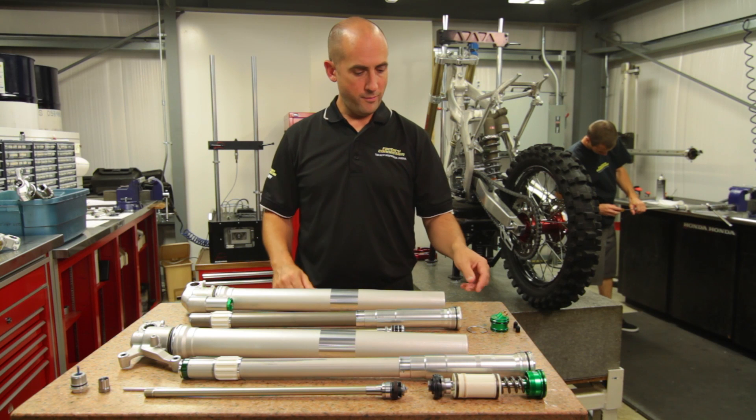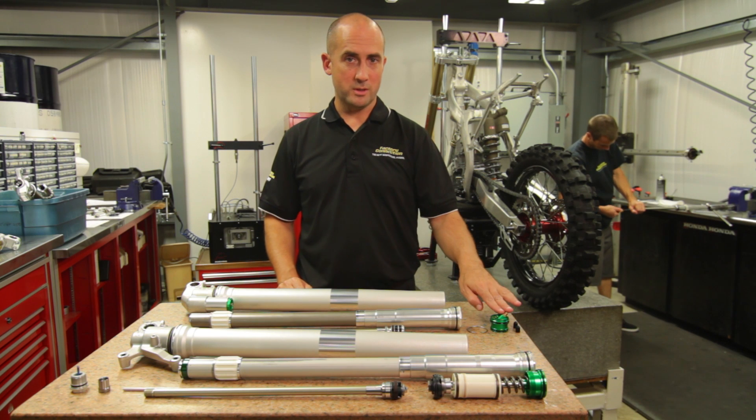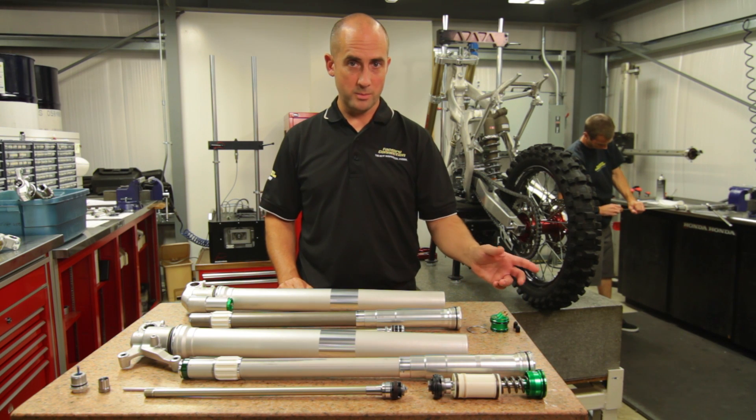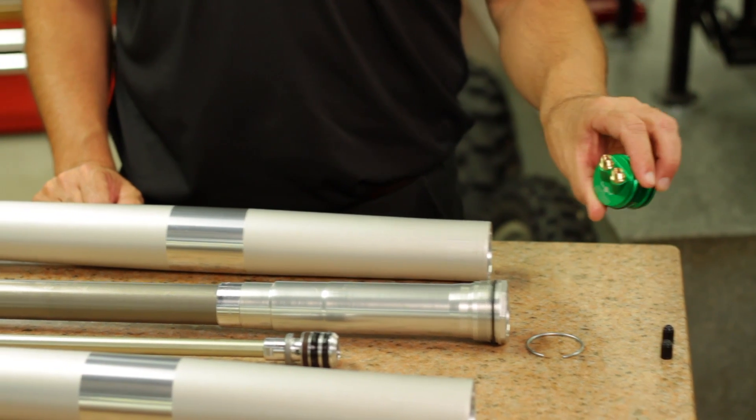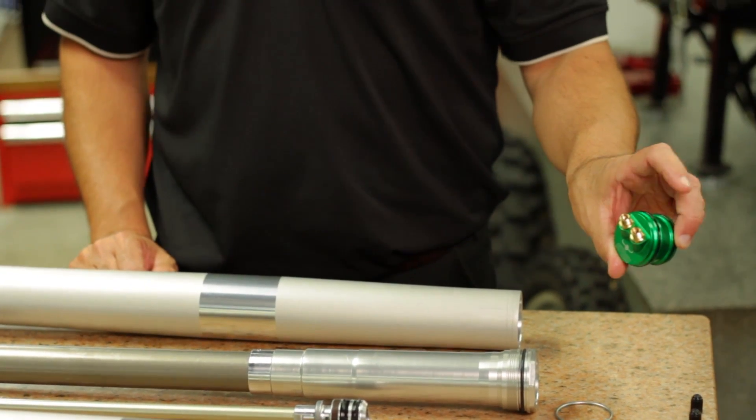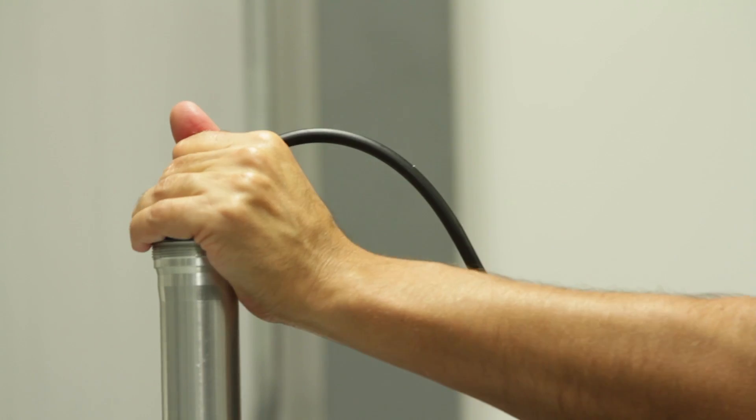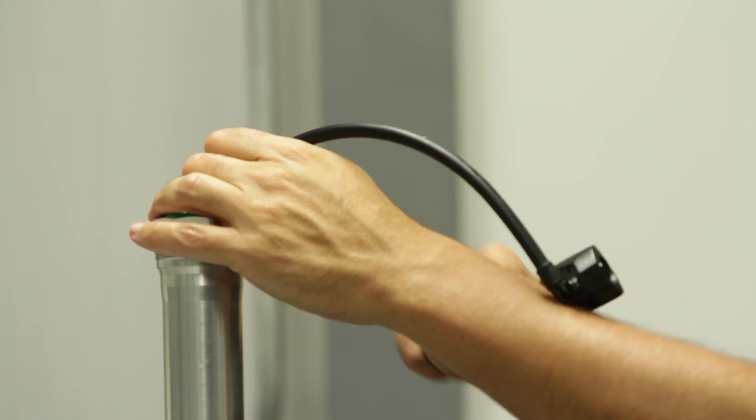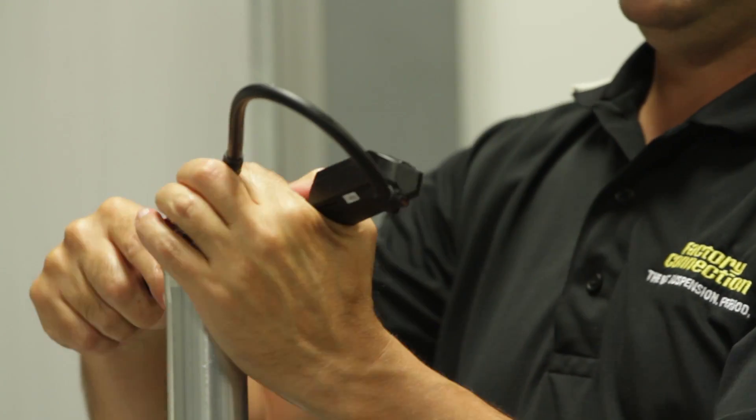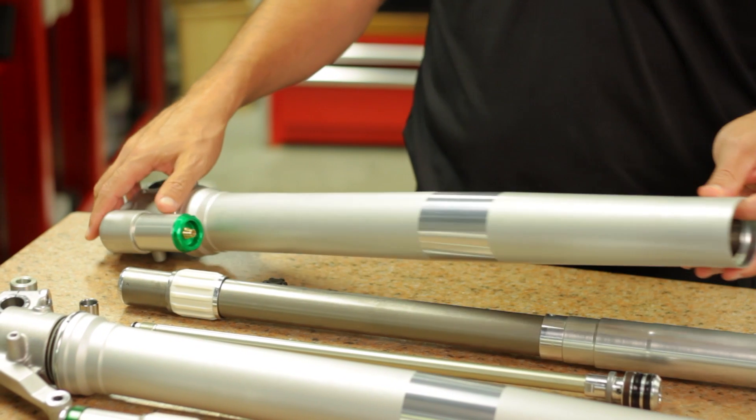New to the air fork, instead of changing springs or preload on springs, you're going to do all this with the different air chambers. We have the inner chamber and outer chamber, which are charged through these Schrader valves, and the negative or balance chamber, which is charged through this Schrader valve here.